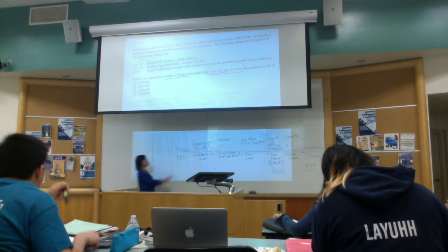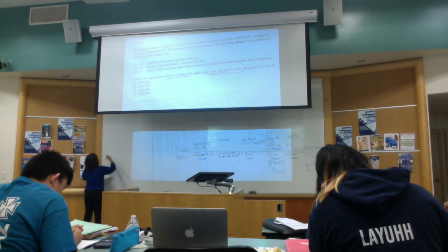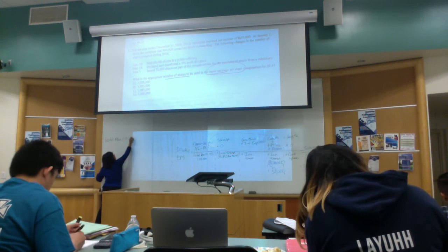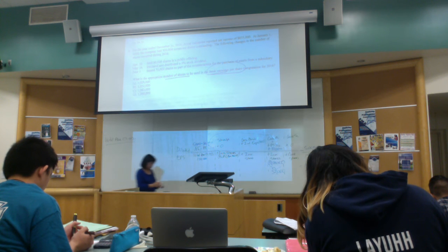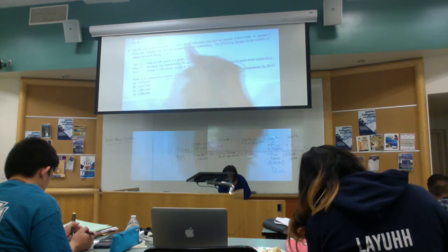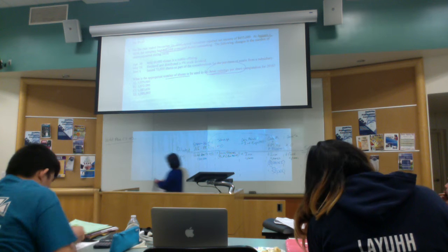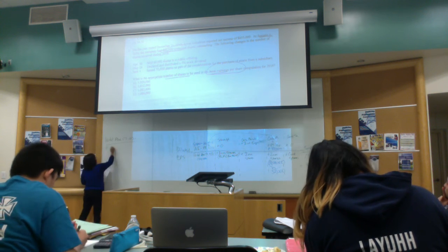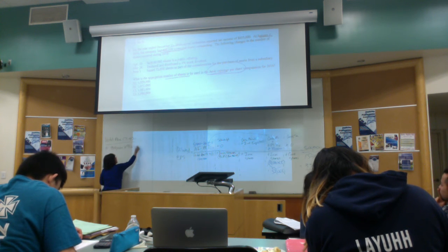I erased this because we already know this is going to be basic EPS. Number one: weighted average common stock outstanding. So as of January 1, we had 900,000 common stock outstanding. So on 1-1, we had 900,000 times 12 over 12, which gives us 900,000.